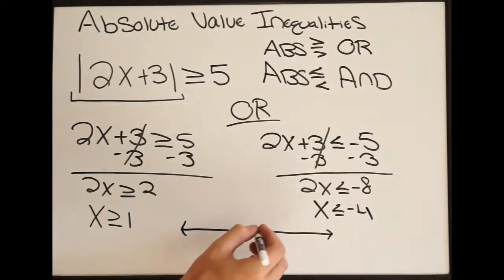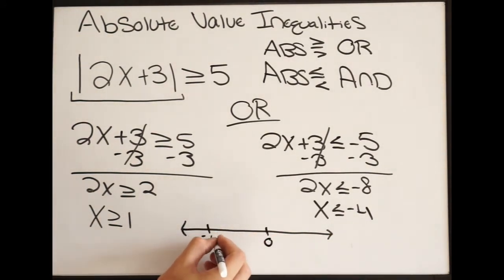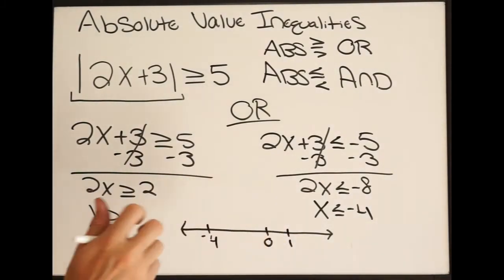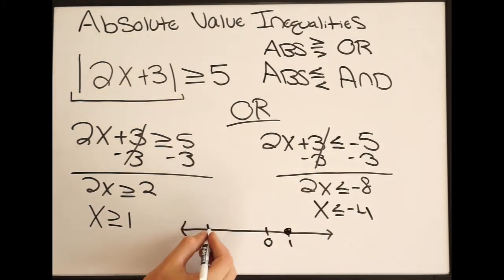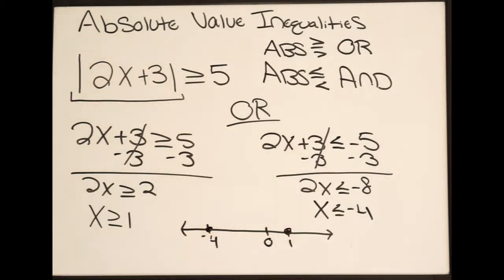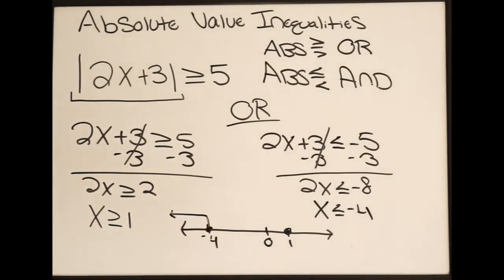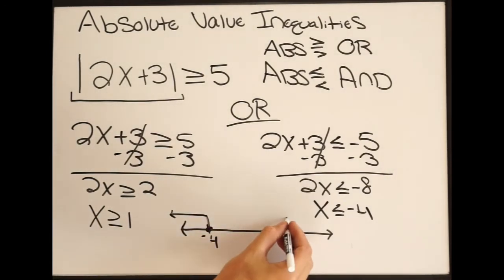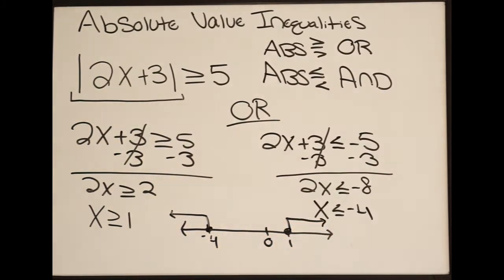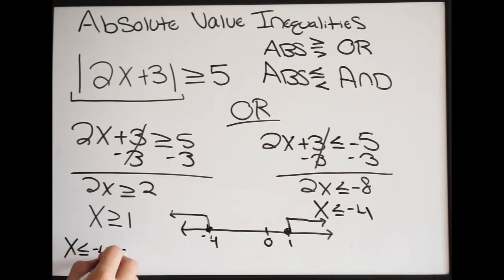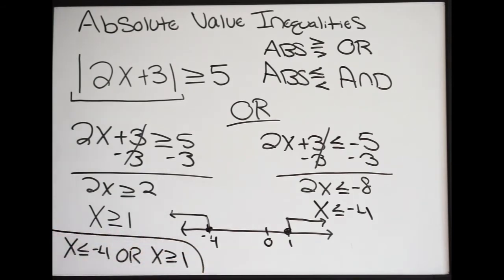We'll graph this on the number line. Put 0 here, negative 4 here, and 1 here. On 1, it's going to be a closed circle. On negative 4, closed circle. Remember it is OR, so x has to be less than or equal to negative 4 — shading in this direction — OR x has to be greater than or equal to 1 — shading in this direction. You can write your solution as: x less than or equal to negative 4, or x greater than or equal to 1.